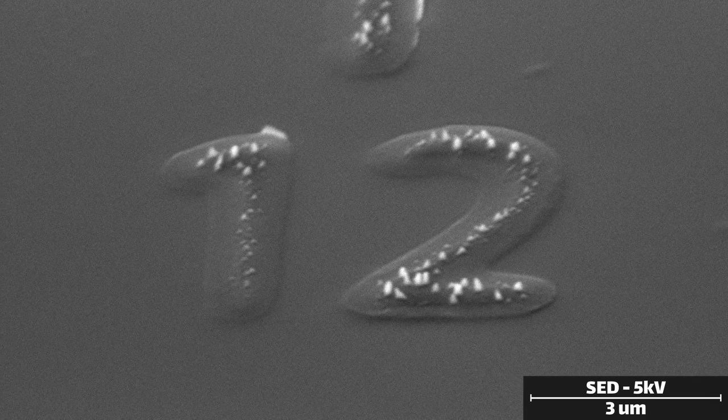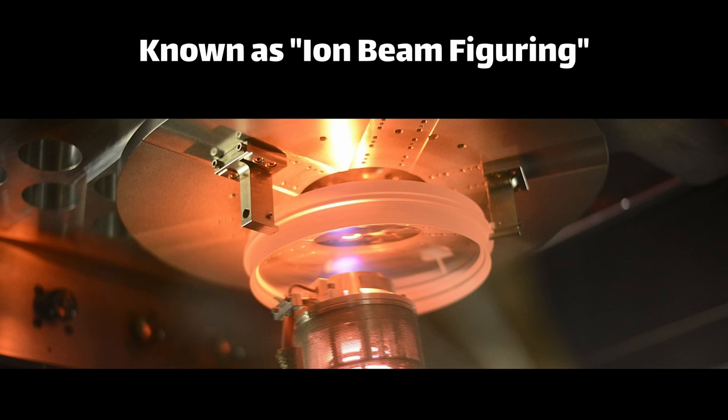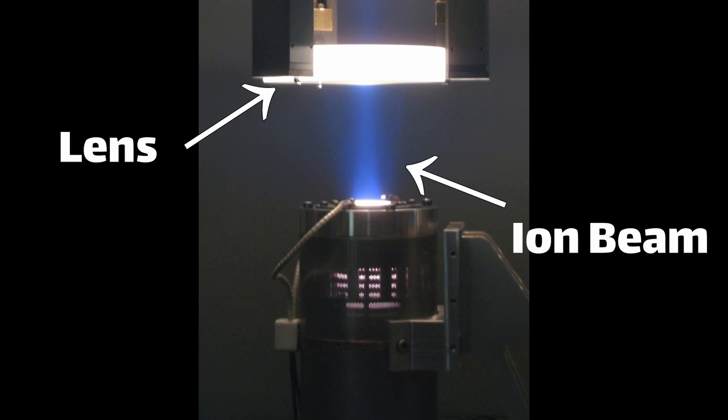Ion milling can also be used for polishing instead of aggressive etching. This is used for example in ultra precision optics, basically as a way to fix nanometer sized errors on telescope mirrors and lenses. It's a way to make adjustments that would be hard or even impossible to do with traditional polishing techniques.